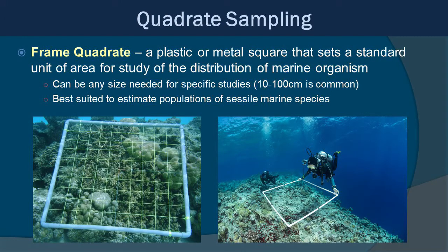The first method is quadrat sampling, where you use a framed quadrat — a plastic or metal square that sets a standard unit area for studying the distribution of marine organisms. They can be sized from 10 centimeters to 100 centimeters, and you can even make really large ones. They're well-suited for estimating populations of sessile marine species — those that don't move around much. You can imagine trying to use a quadrat to sample fish; it wouldn't work well. But for snails, corals, seagrass coverage, and similar mostly sessile organisms, it works great.